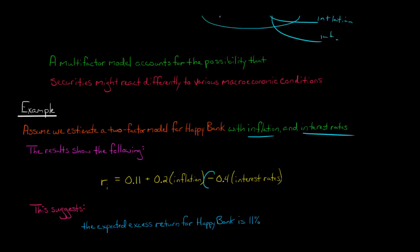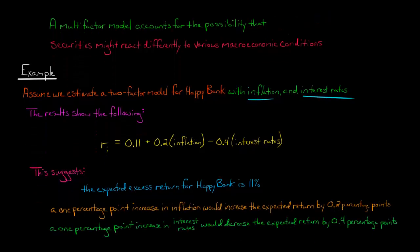Okay, now, conversely, we have a negative sign with our other factor. So that means that if we were to have an unexpected one percentage point increase in interest rates, then that would predict that we would have a decrease of 0.4 percentage points in the expected return.